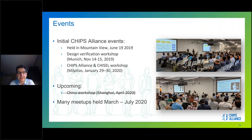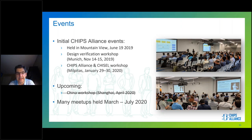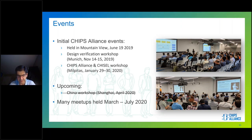In terms of events, the inaugural event was held in 2019 in Mountain View on Google's campus, followed by a design verification workshop in Munich last November, and a Chips Alliance and Chisel workshop held in Milpitas in January. Unfortunately, due to the COVID crisis, the planned face-to-face workshop in China hosted by Alibaba had to be cancelled. It's difficult to say when face-to-face workshops will resume, but Chips Alliance took advantage of the higher popularity of online meetings, holding many meetups starting March this year.